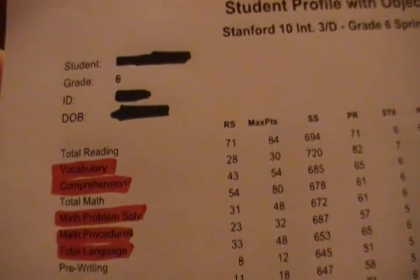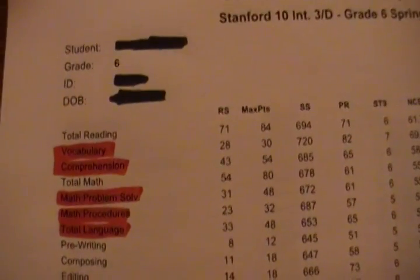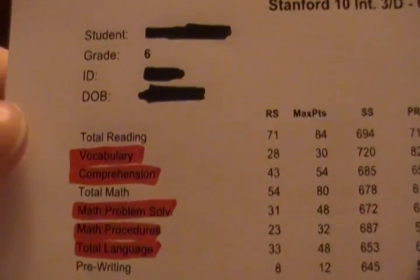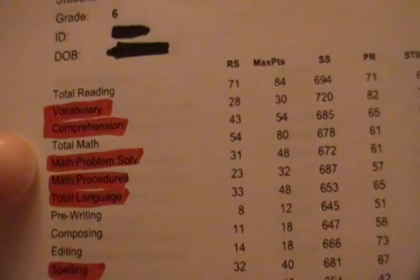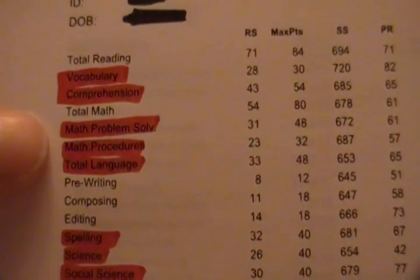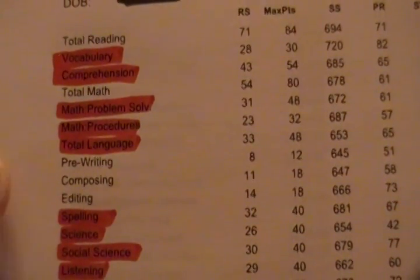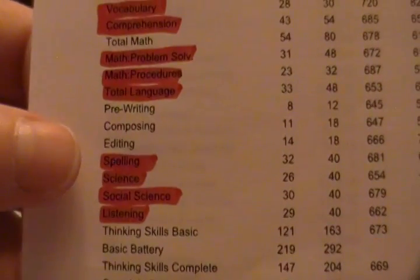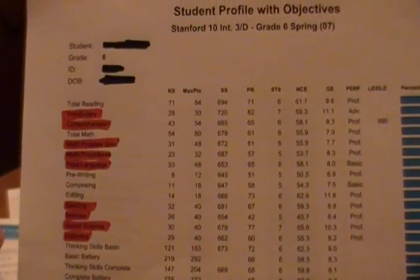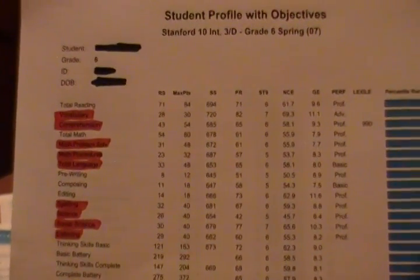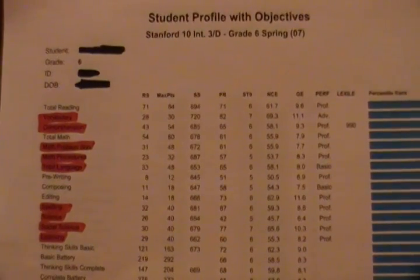Let's come over and look at the subjects. What is on a sixth grade test? I've actually highlighted the subjects — yours doesn't come highlighted, but I highlighted them. Vocabulary is a section, reading comprehension is a section, math problem solving, math procedures, language, spelling, then science, social science, and listening. Thinking skills basics is not actually a separate test — those are built-in, embedded questions that show how well your student is using their thinking skills.